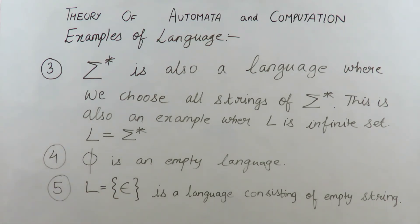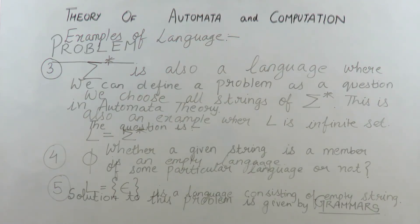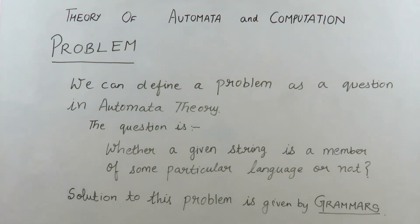The concept of language should now be clear. Note that the language set can be finite or even infinite, but the alphabet set is always finite and non-empty. So far, across our previous video and this video, we have discussed the three main entities of automata and computation: alphabet, strings, and languages.